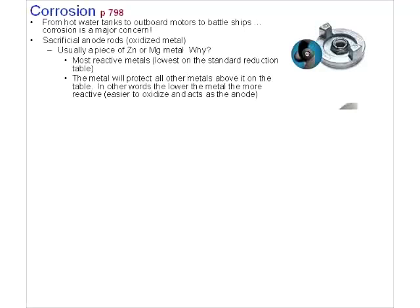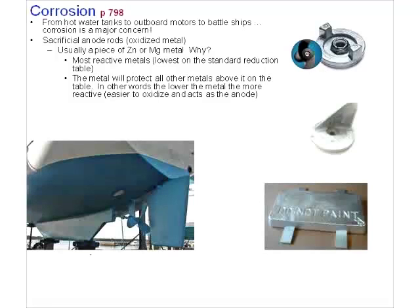Another aspect of electrochemistry is corrosion — basically the rusting of metals. Here are some examples of where corrosion needs to be controlled. We use sacrificial anode rods to protect metal parts of battleships, outboard motors, hot water tanks — anything in contact with water and salt spray that's going to corrode.